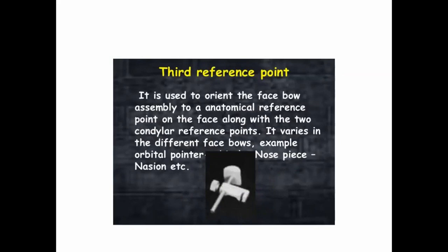Then comes the third reference point. It is used to orient the facebow assembly to the anatomical reference point on the face along with the two condylar reference points. It varies in different facebows — for example, the orbital pointer and the nasion relater assembly. Along with the two posterior reference points, it forms the plane of orientation.